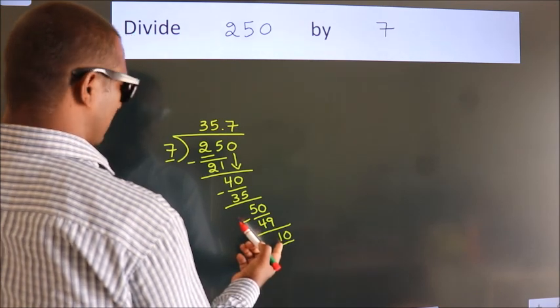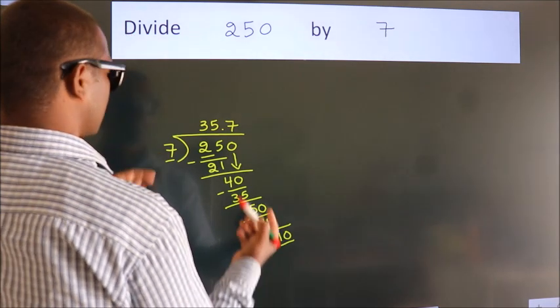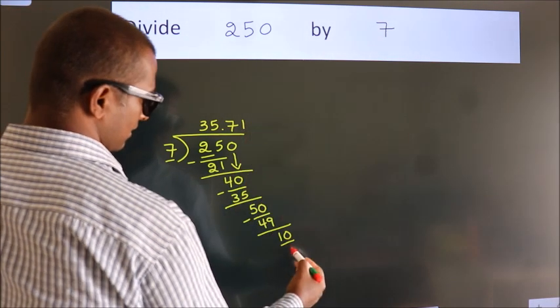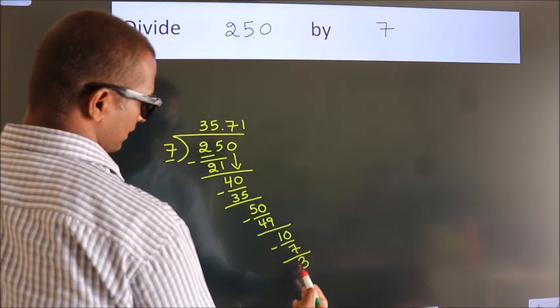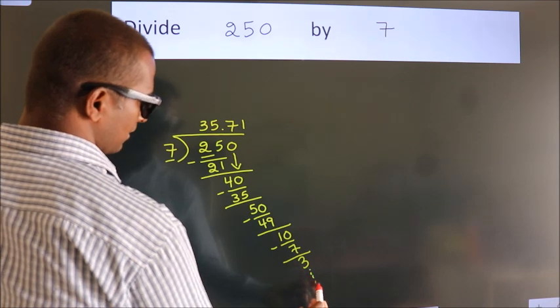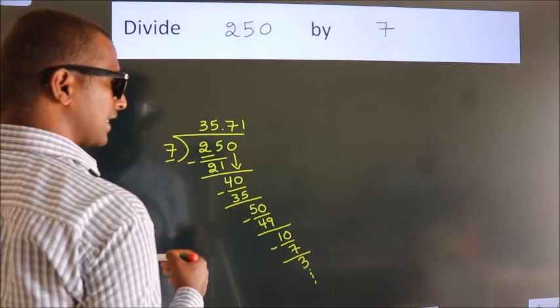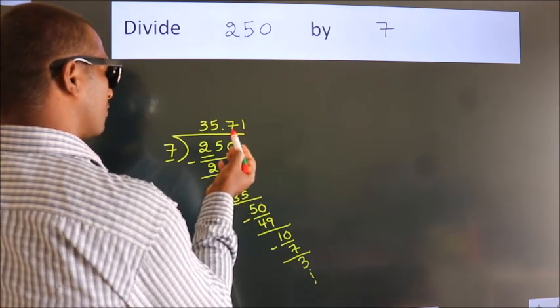A number close to 10 in the 7 table is 7 ones, 7. Now we subtract. We get 3. And the division continues. It is enough if we do up to 2 decimal places.